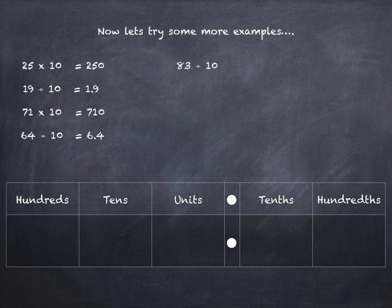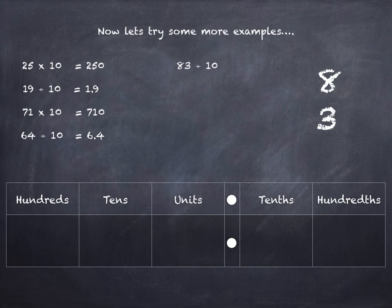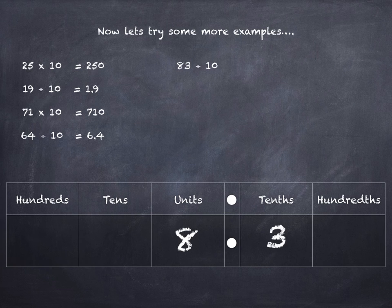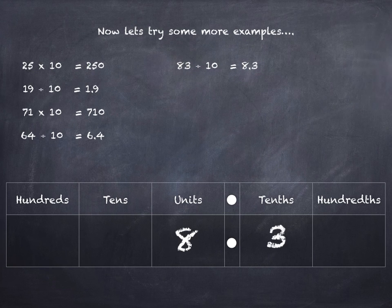83 divided by 10. Pop them into the tens and units column. Dividing so we're going to the right — one place each to the right. 83 divided by 10 is 8.3.